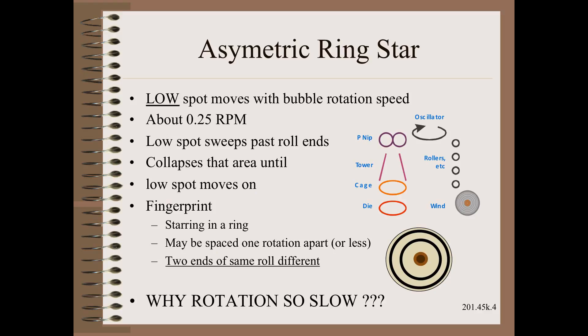Let us finish with a defect that is unique to blown film — what I call the asymmetric ring star. While the most common case of starring extends from very near the core upward some distance, the ring star is located on a band well above the core. If both sides of the roll are symmetrical, the cause could be an abrupt but momentary loss of one of the TNTs occurring when that portion of the roll was made.